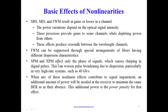Self-phase modulation and cross-phase modulation affect only the phase of signals, which causes chirping in digital pulses. This chirping can worsen pulse broadening due to dispersion, particularly in high data rate systems like 40 Gb/s. When any of these non-linear effects contribute to signal impairments, an additional amount of power will be needed at the receiver to maintain the same BER as in the absence of these non-linearities — this additional power is called the power penalty for that effect.